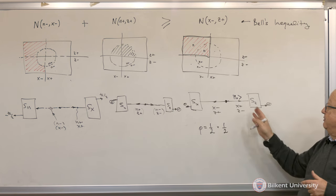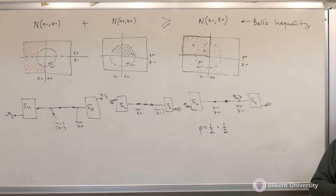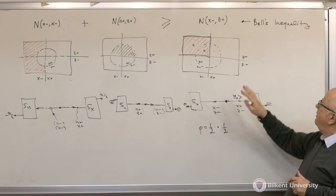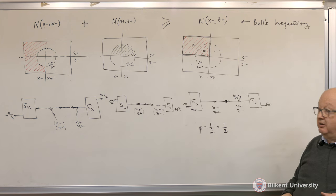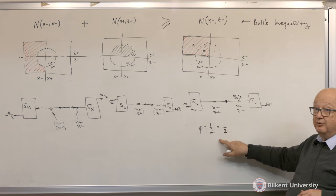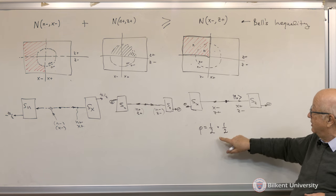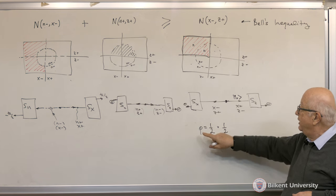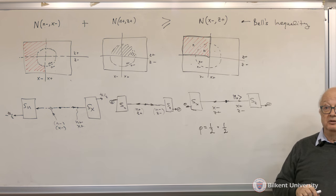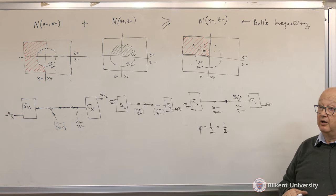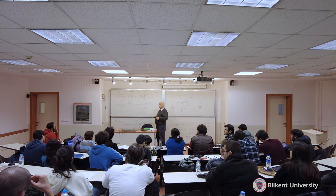So this easy case says that if I make this experiment one million times, 250,000 times — one-fourth of those cases on average — I'm going to get minus-minus on both sides. The probability is one-half for the x measurement — that's given.